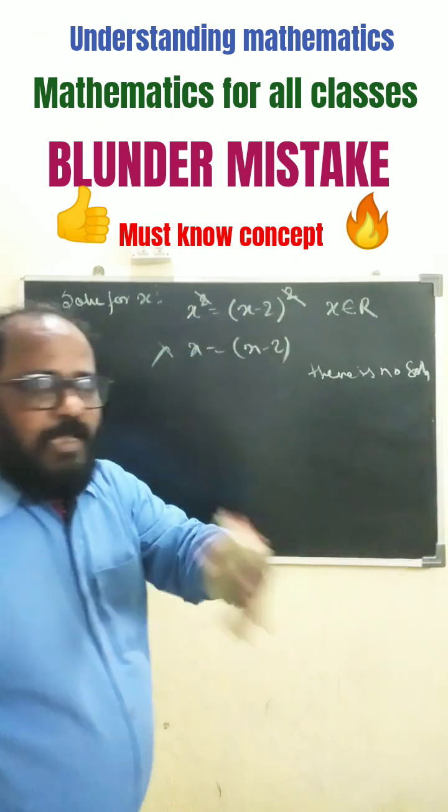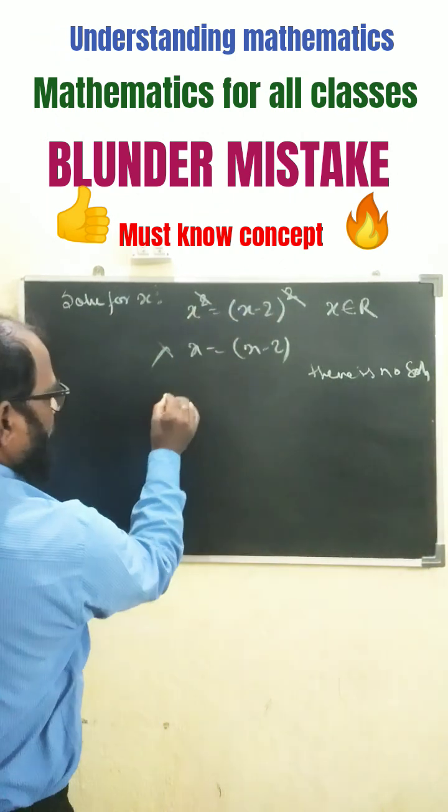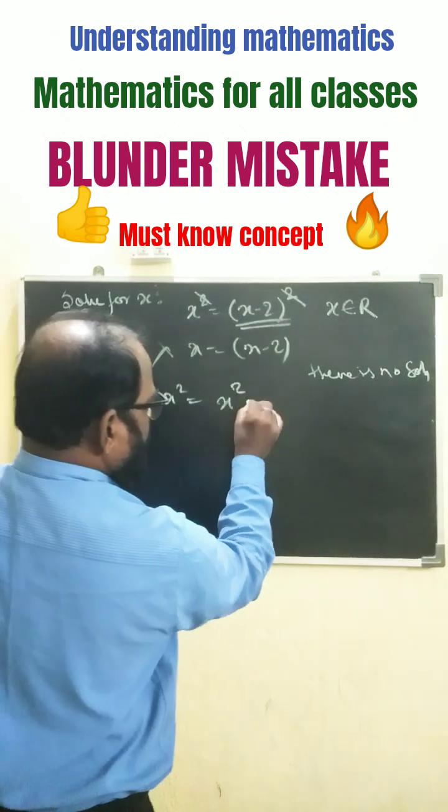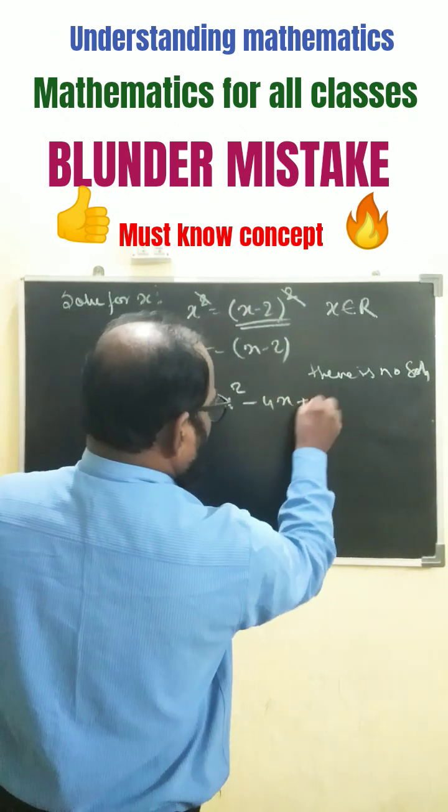We have a solution, let us check it out. Here it is given that x square equals to, you expand this, expanding this will be x square minus 4x plus 4.